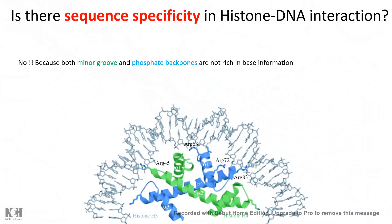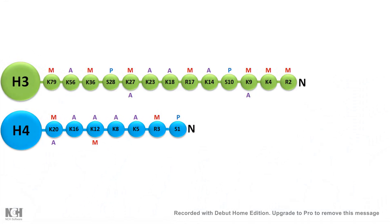Why is there no sequence specificity between DNA and histone interaction? If there were sequence specificity, a cell would have to produce several thousand different types of histones in order to recognize specific sequences of DNA. That is why histones generally interact with the minor groove and phosphate backbone, which are less rich in information. Histone tails, on the other hand, are rich in several types of amino acids and are hotspots for modifications like phosphorylation, methylation, and acetylation.